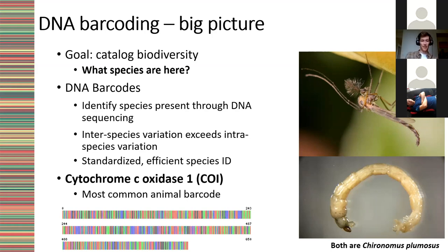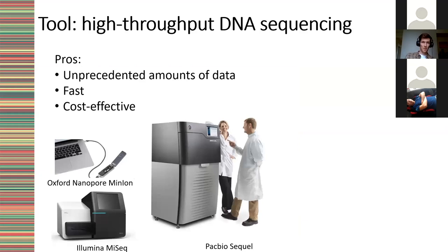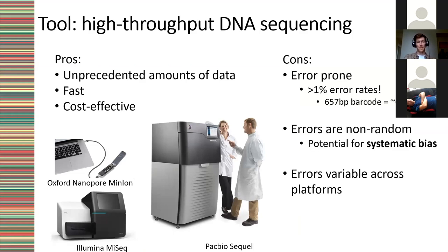CO1 is a mitochondrial gene essential to metabolism, so we can rely on it being present in every animal examined because it's needed for the mitochondria to perform its function properly. The tool we use to gather this information is high-throughput DNA sequencing. Since this is a bioinformatics users group I won't go into too much detail, but it lets us get a large amount of information in a fast and cost-effective manner, though it does have certain caveats we have to address with the data produced.